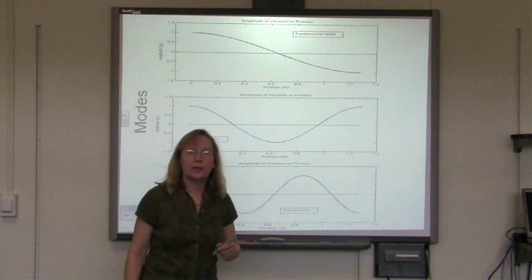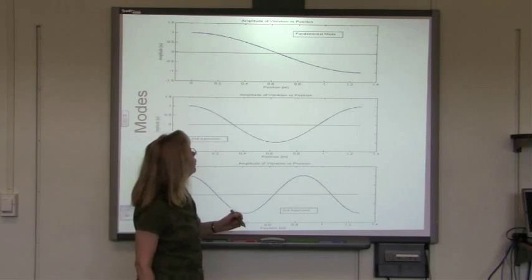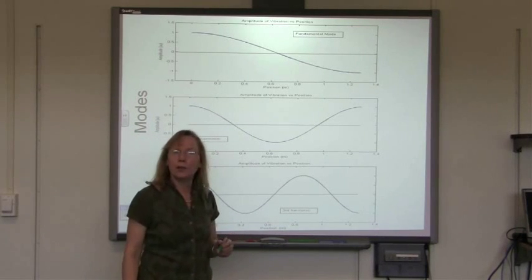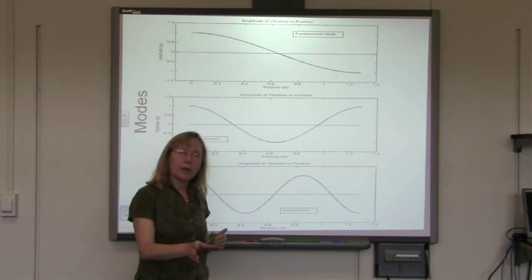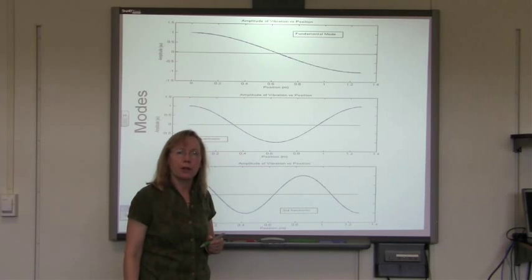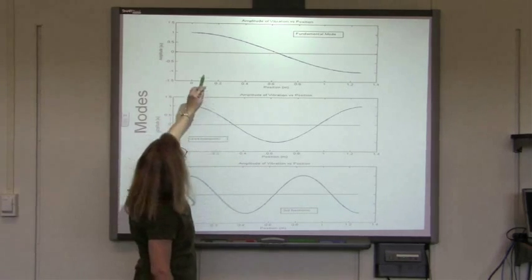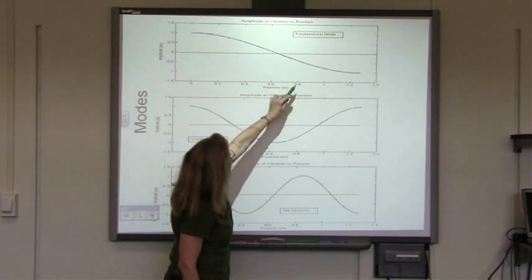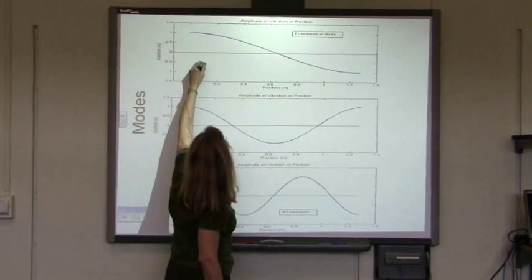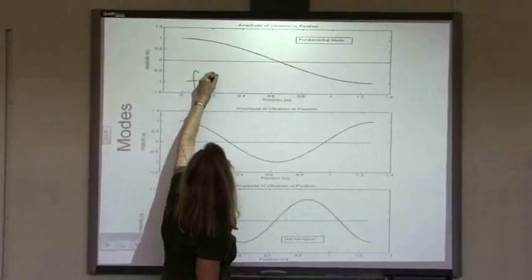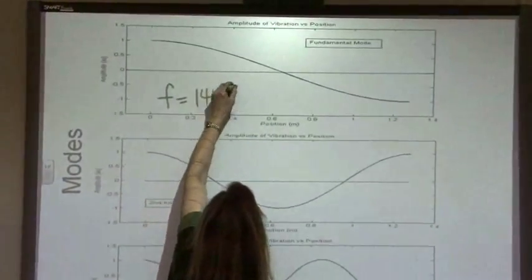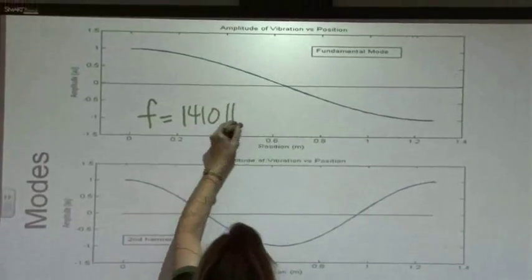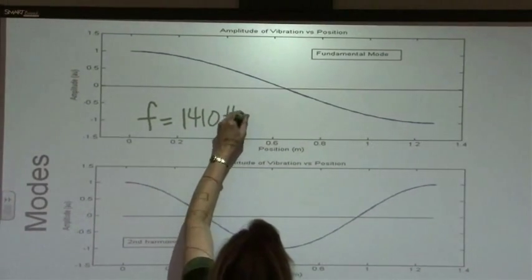Okay, for the last part of this, we're going to take a look and see if we can figure out what the speed of the waves on that aluminum rod are by the wavelength and by the frequency that we saw in the fundamental. For the fundamental mode, the frequency that we saw on the plot was 1.4 kilohertz or 1410 hertz.